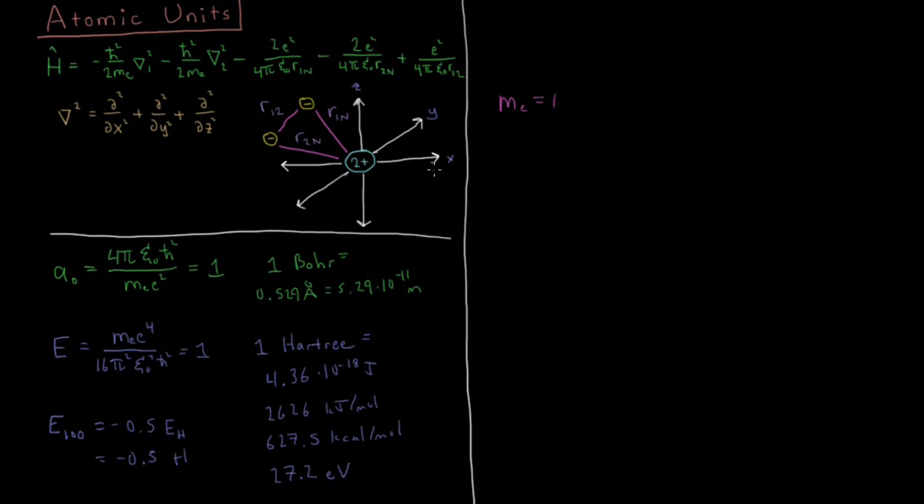Mass of the electron is going to be set equal to 1. That quantity in SI units is 9.11 times 10 to the minus 31 kilograms. The charge of the electron, or at least the magnitude of the charge on the electron, is going to be 1. That's going to be 1.60 times 10 to the minus 19th coulombs in SI units. Our old friend h-bar is going to be 1, and h-bar in SI is 1.055 times 10 to the minus 34 joules seconds.